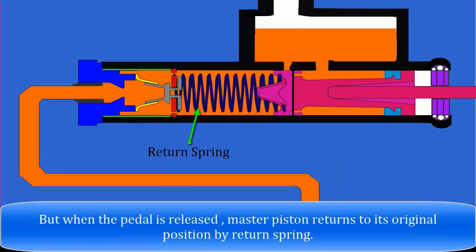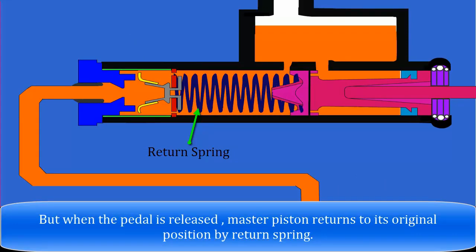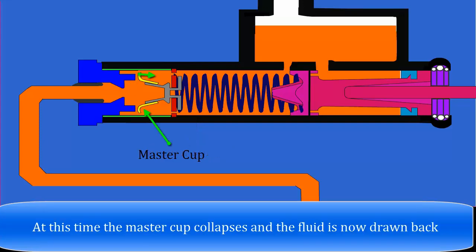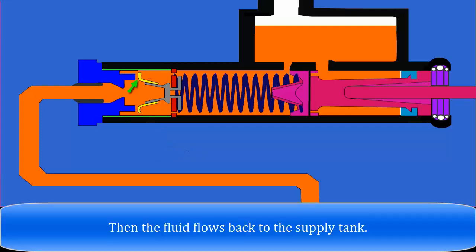But when the pedal is released, the master piston returns to its original position by the return spring. At this time the master cup collapses, and the fluid is now drawn back. Then the fluid flows back to the supply tank.